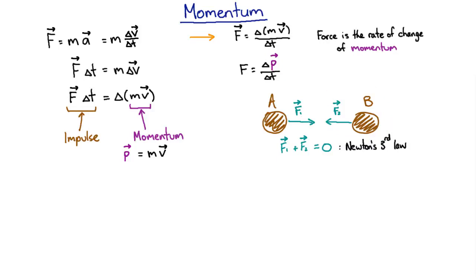And if we add up those two changes in momentum, so once again we use the capital delta to denote a change, so the change in momentum of particle A, we'll write like that, and the change in momentum of particle B, we write like that.